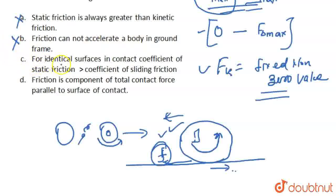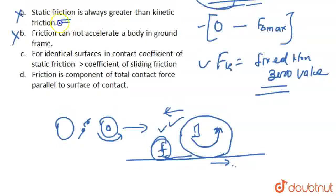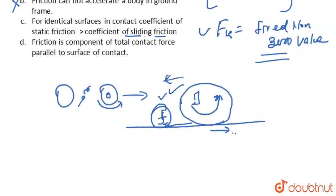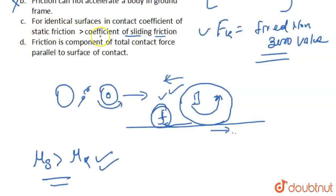The third option is: for identical surfaces in contact, the coefficient of static friction is greater than the coefficient of sliding friction. The first option was about friction force — kinetic friction force and static friction force. The third option is about the coefficient of static friction and the coefficient of sliding friction. The coefficient of static friction mu_s is greater than the coefficient of kinetic friction mu_k. Yes, this is the correct option, as long as we are considering both frictions on the same surface. So the third option is correct.